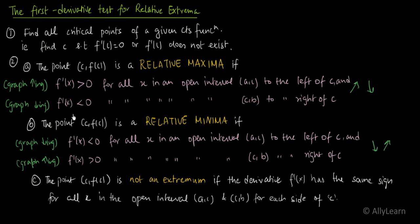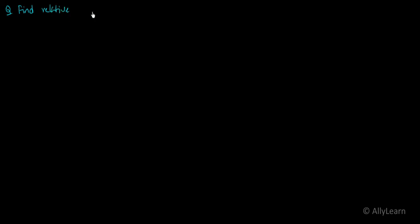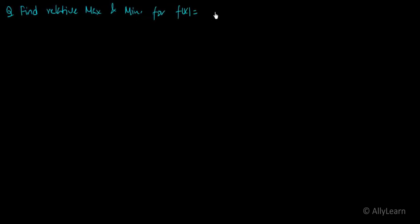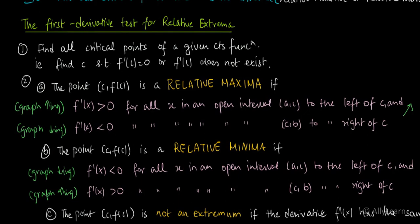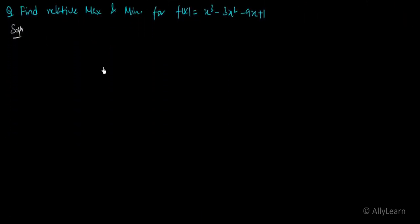Now let's use this First Derivative Test to solve a question: find the points of relative maxima and minima for f(x) = x³ - 3x² - 9x + 1. First, we have to find all critical points.